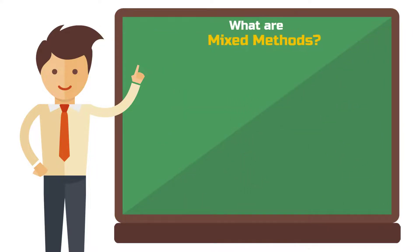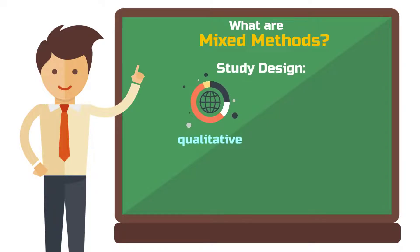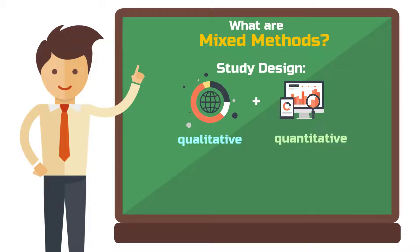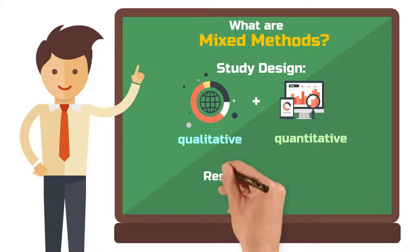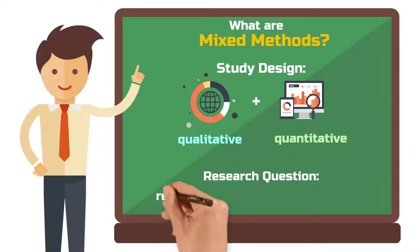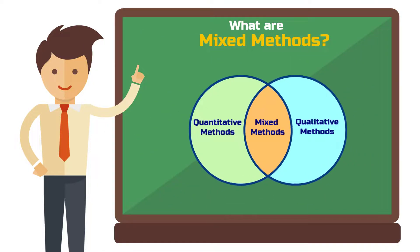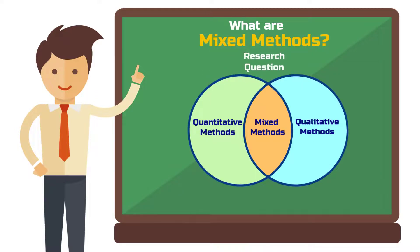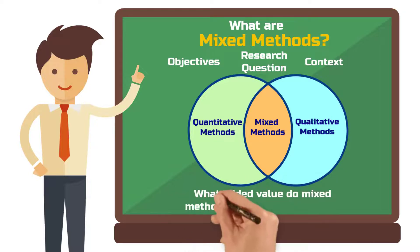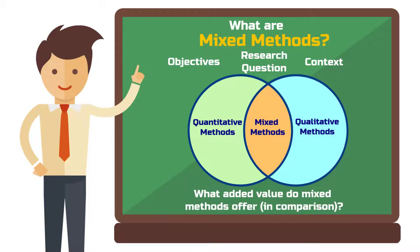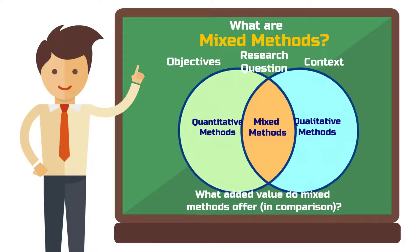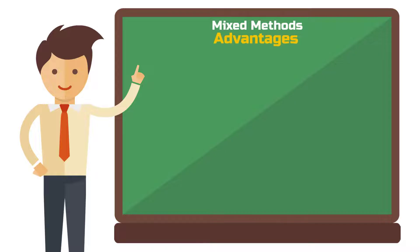To speak of mixed methods, a study design must include both qualitative and quantitative elements. This means the study design is intentionally developed with this combination in mind, and the research question can only be answered through this combination. The choice of method or combination should always be closely linked to the research question, objectives, and context. The first question you should ask yourself is: what added value do mixed methods offer compared to a study design with only qualitative or only quantitative methods?